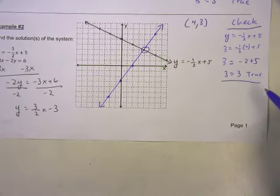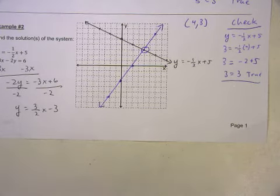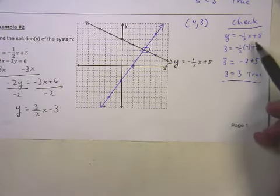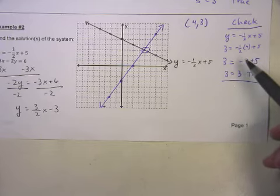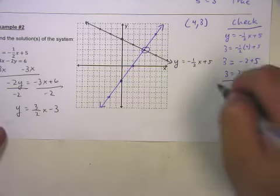Okay? But that right there doesn't prove that it's a solution. Right? That proves it's a solution for the first equation. But it hasn't proven that it's a solution for the whole system. Right? We have to check both because it has to satisfy both equations. All right? Let's check the second equation.